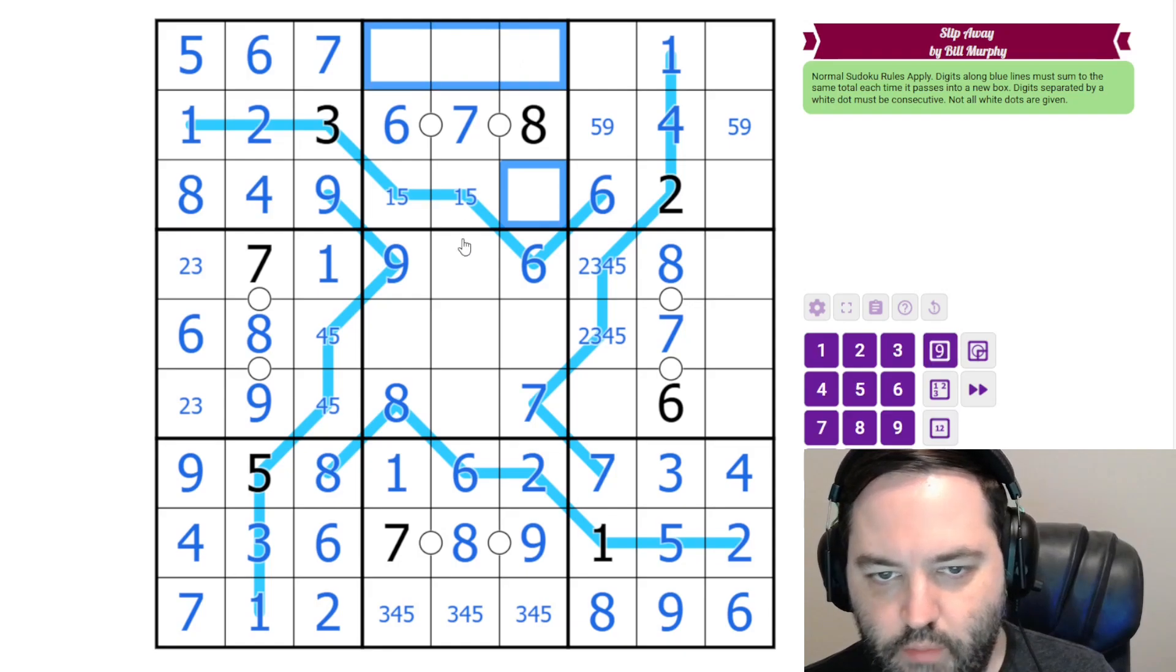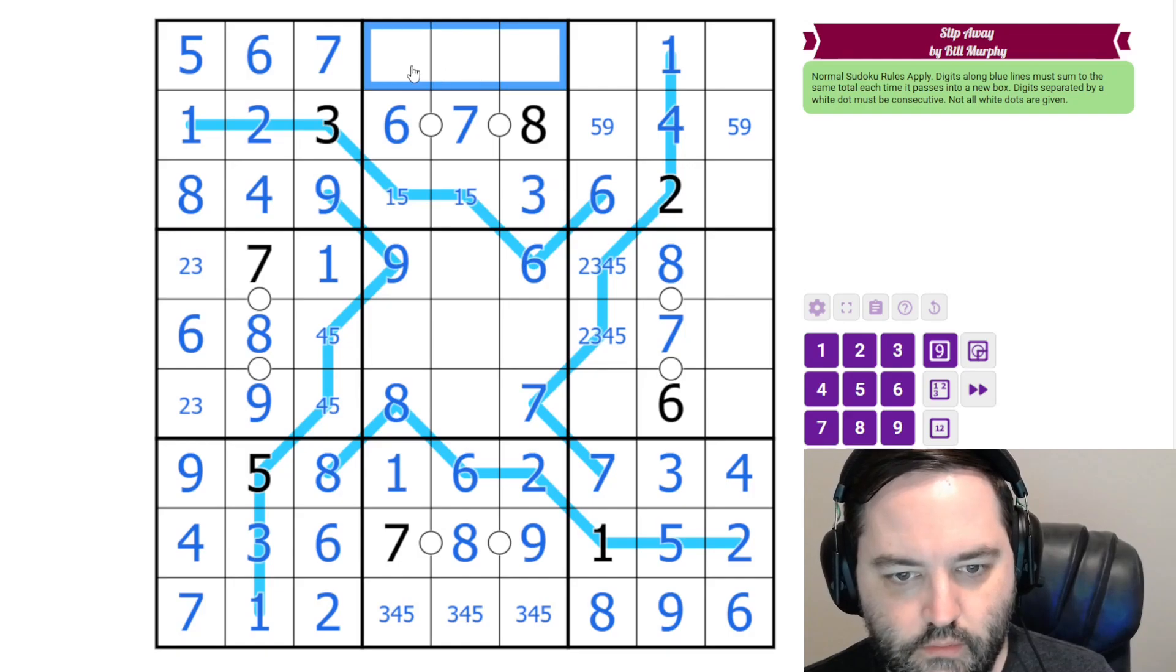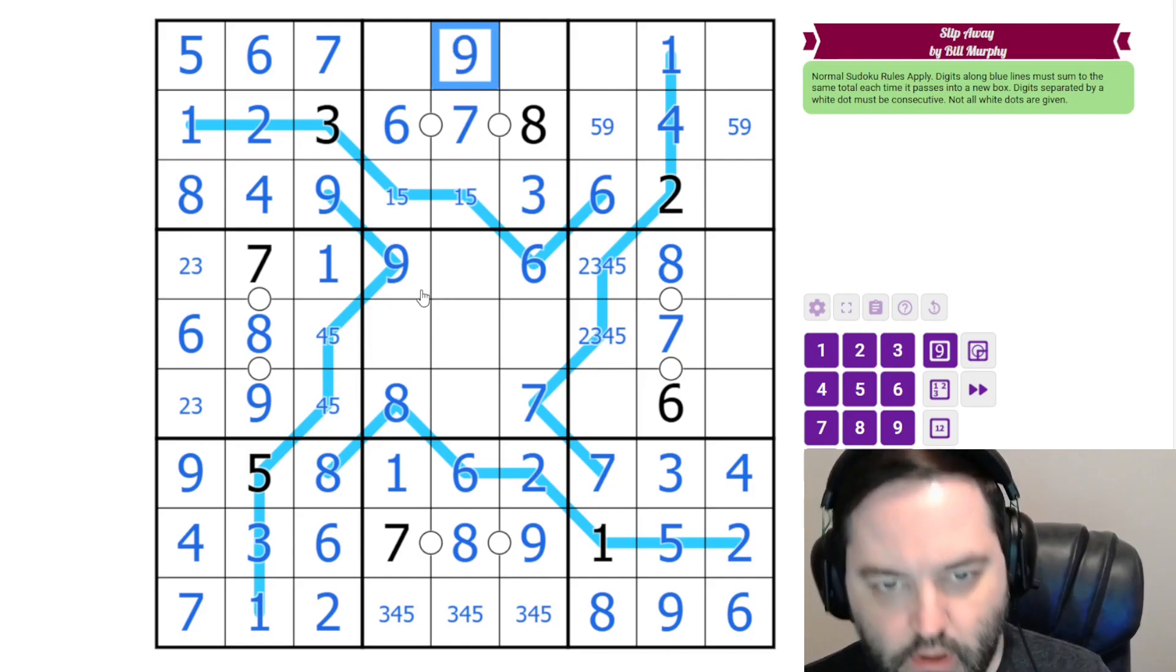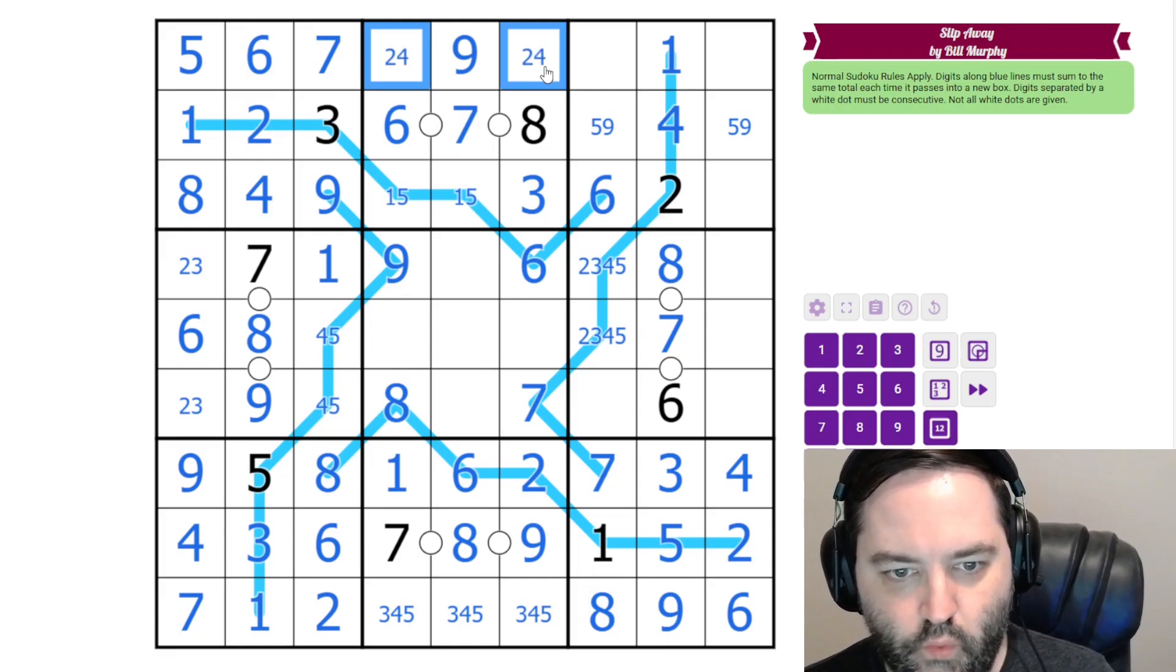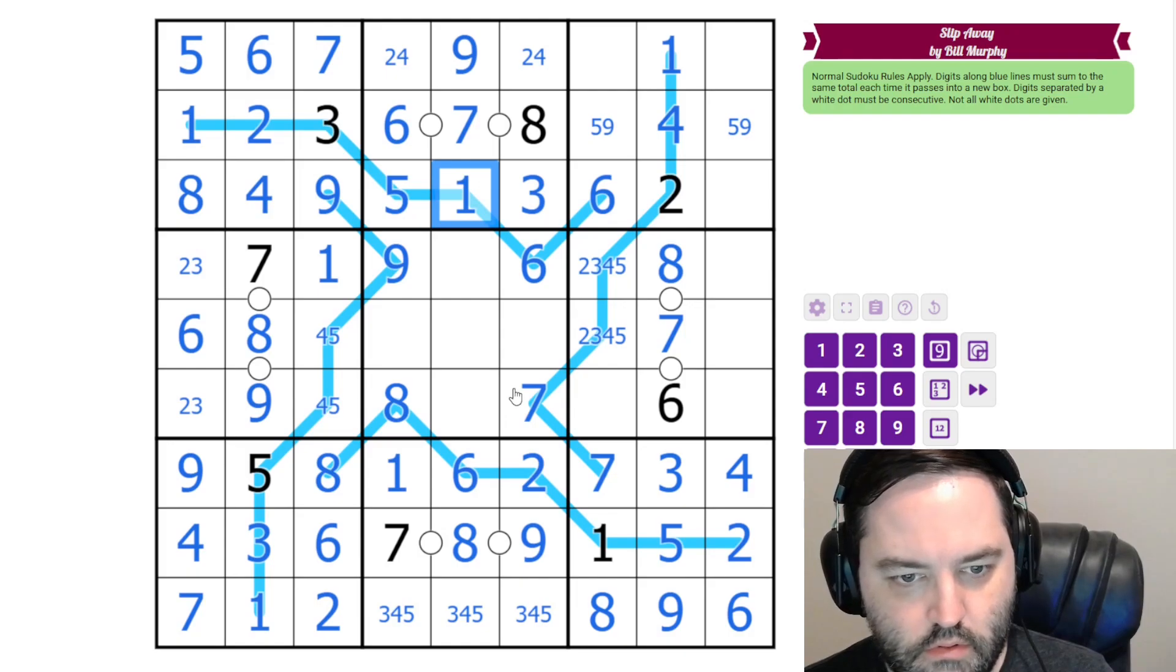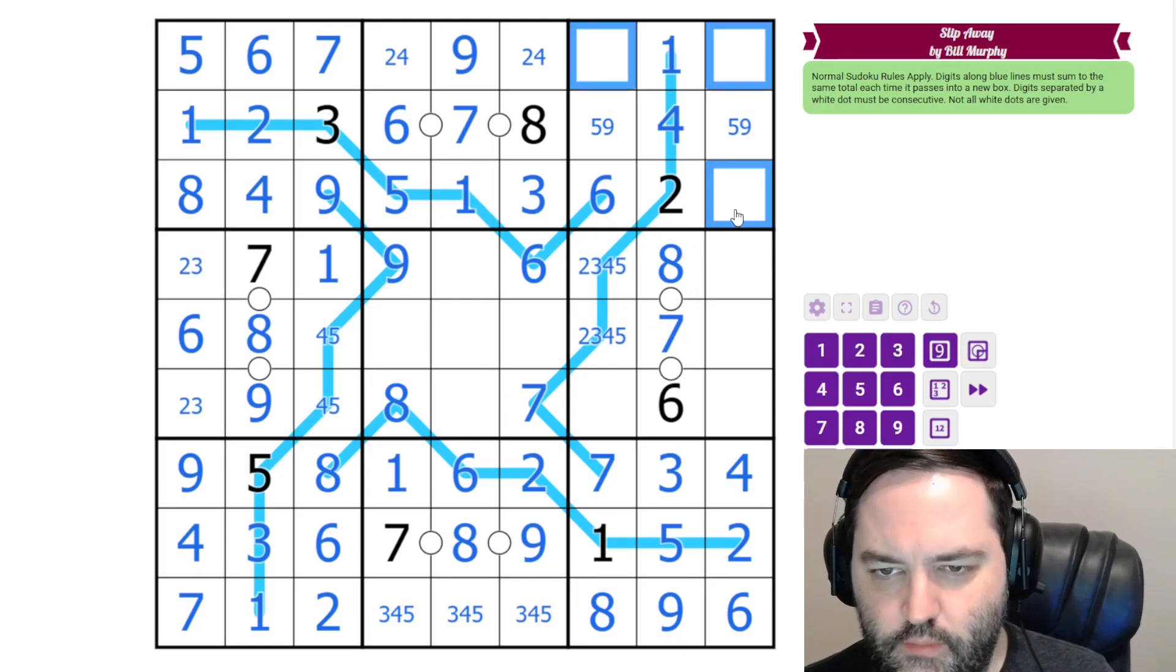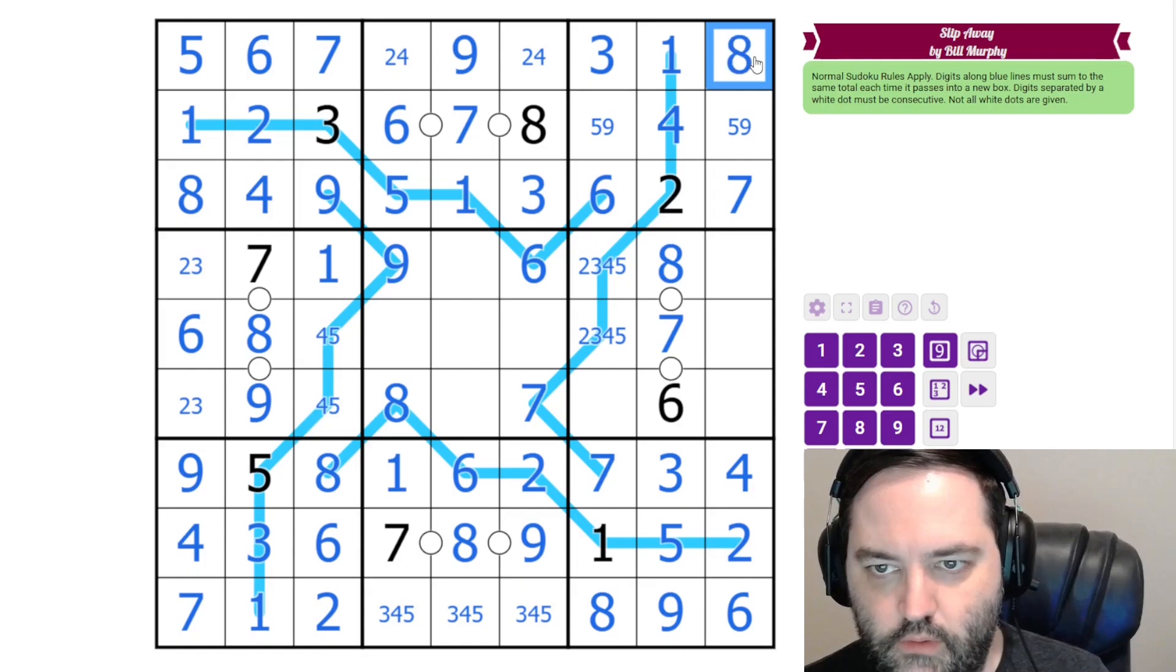All right, in this box, we need 2, 3, 4, and 9. And we have 3 of those digits, so that's the 3. 9 can only go here because of these 9s. These are 2 and 4. The 1 here is 5 and 1. All right, this box needs 3, 7, and 8. The 7 looks over, so that's 7. And then the 8, this is 3 and 8.